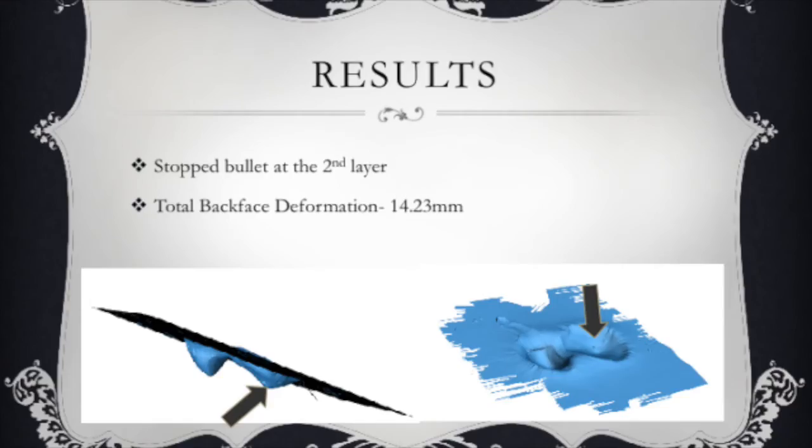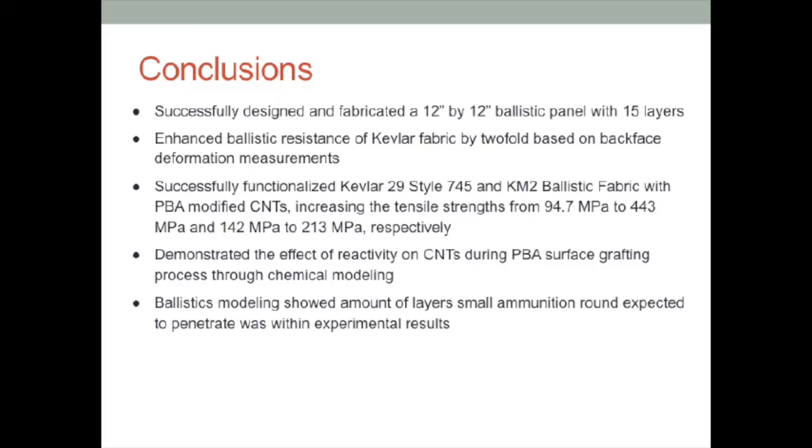So this brings us to our conclusion. We were able to successfully functionalize the CNTs onto the Kevlar with the chemical process we outlined. We were able to take that fabrication, scale it up to make 15 twelve inch by twelve inch layers, and we were able to successfully test and characterize those layers. We were also able to fabricate and model for the KM2 military grade Kevlar, so we've shown that the process is mobile to other para-aramid woven fabrics. We were able to increase the strength of the Kevlar 29 by 400% and KM2 by 150%.